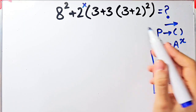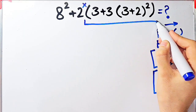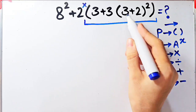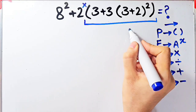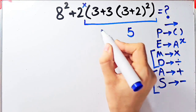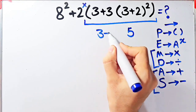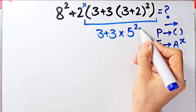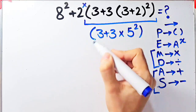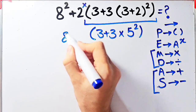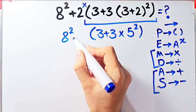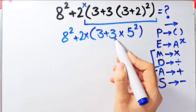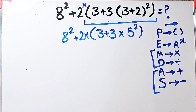First we simplify the parentheses. Inside these parentheses we have another set of parentheses. 3 plus 2 equals 5. Now we have 3 plus 3 times 5 to the power of 2 inside the parentheses. So the question is now 8 to the power of 2, plus 2 times 3, plus 3 times 5 to the power of 2.